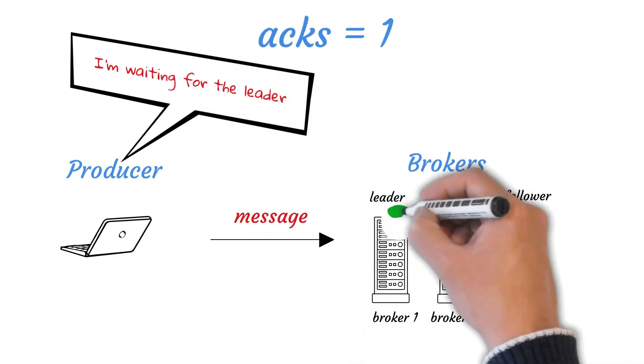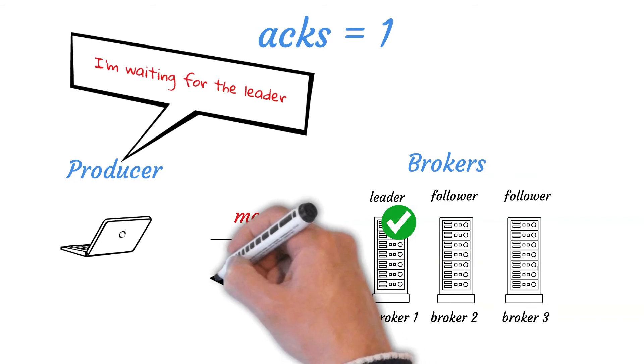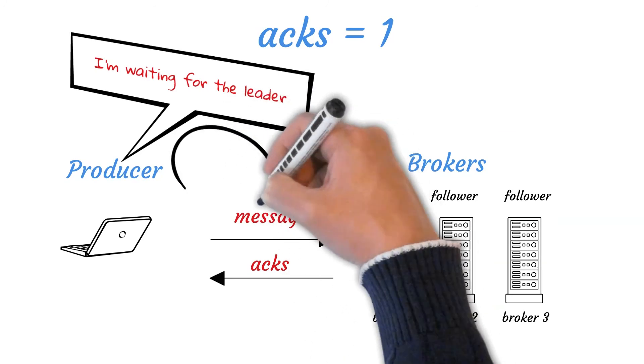This setting is the middle ground for latency, throughput, and durability. It is slower but more durable than when acknowledgement equals zero.